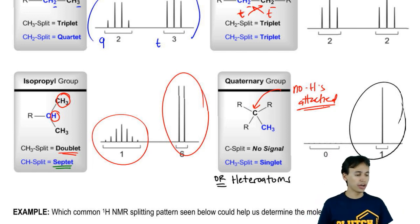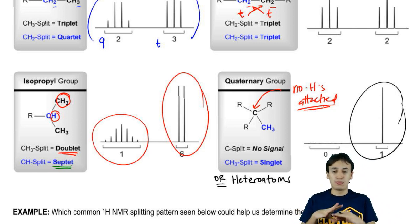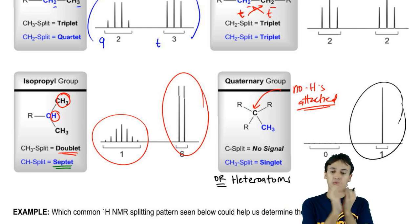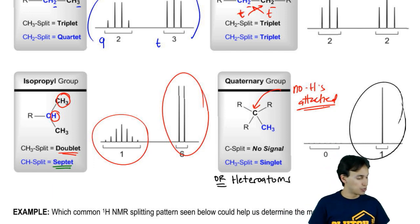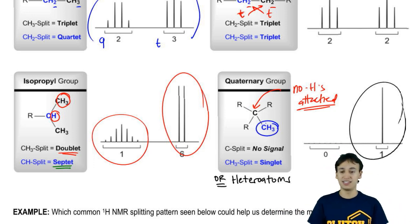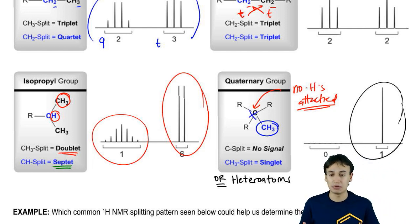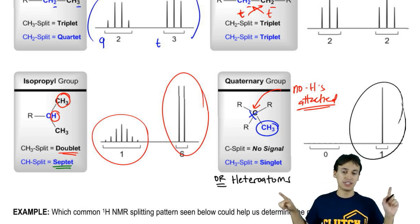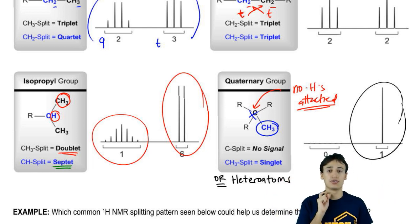I'm calling it a quaternary group because it's got four things around it that aren't hydrogen. But there are other examples — it doesn't have to just be R groups. It could be a carbonyl and an R, meaning you have four bonds to carbon that are not to H. That means when you try to split this thing, it's not going to split, because it's next to a carbon without hydrogen. Heteroatoms are our first thought when we see singlets, but if you can't figure out that it's a heteroatom, then you might want to consider that this carbon might not have any hydrogens attached to it.